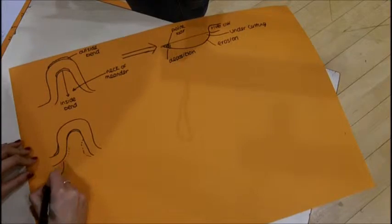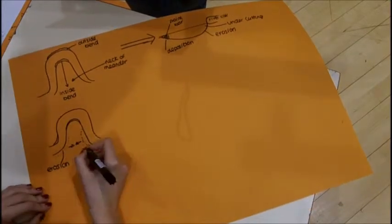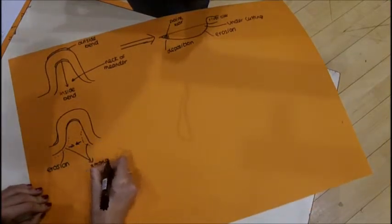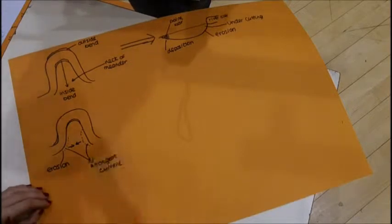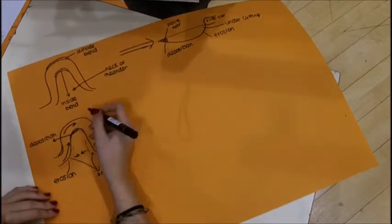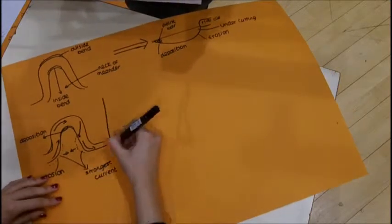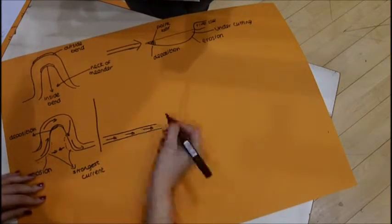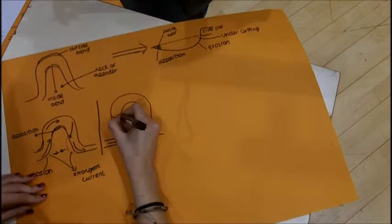Over time, continued erosion of the neck of the meander makes it become tighter. The river eventually breaks through. As it happens, the river then takes a straight route. Deposition finally blocks the meander, leaving an oxbow lake.